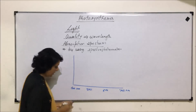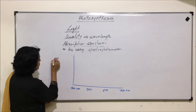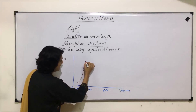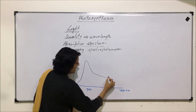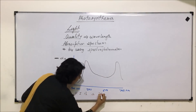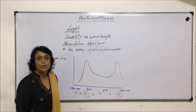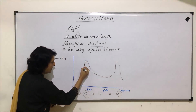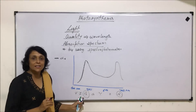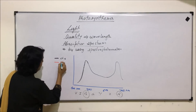On the graph, we mark 500 and 600 nanometers. Using black for chlorophyll A, it was found that chlorophyll A gave a graph with two peaks. Writing out VIBGYOR, one peak was in the blue region and the other in the red region. This black line represents chlorophyll A, showing that chlorophyll A absorbs maximum blue and red wavelengths.